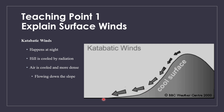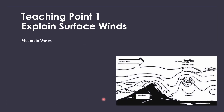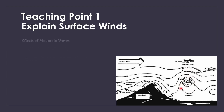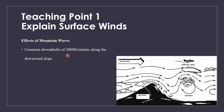Other than anabatic and katabatic winds, there are also mountain waves. Mountain waves have two parts. Looking at this diagram, you can see air going up the slope is smooth air, but when it goes over the top of the slope it starts to get really bad — there are eddies and turbulence on the downward side. There will be common downdrafts of 2,000 feet per minute along the downward slope, pushing your aircraft downwards, which is pretty dangerous.